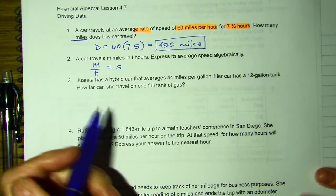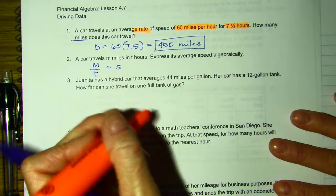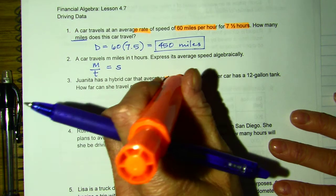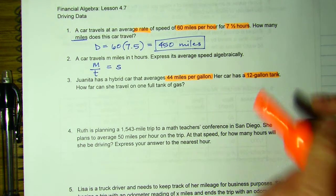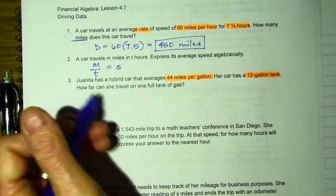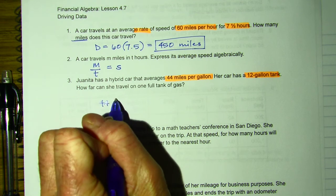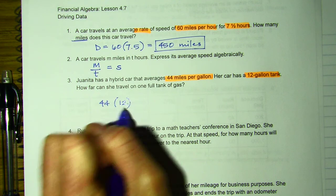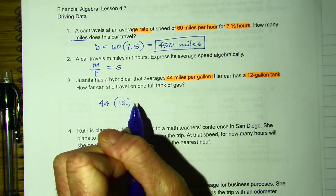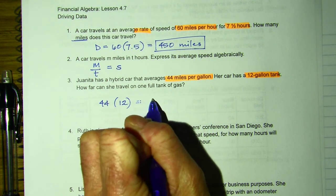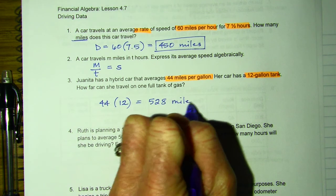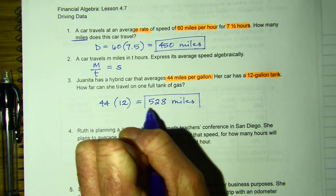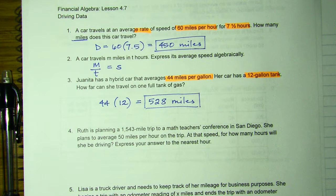Number three, Juanita has a hybrid car that averages 44 miles per gallon. She has a 12-gallon tank. How far can she travel? So 44 times 12, she can do 44 per gallon, and there happens to be 12 of them. Simply multiply, and she can travel 525.8 miles. Really simple math-wise.